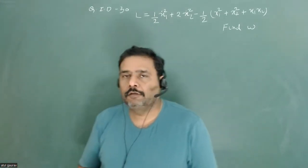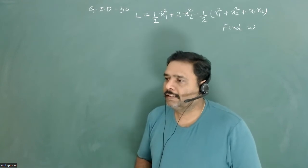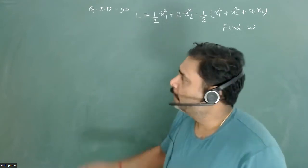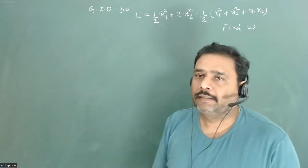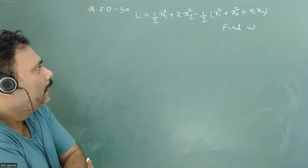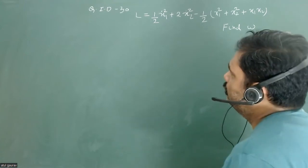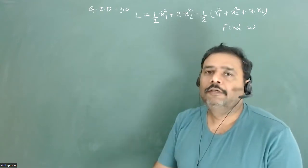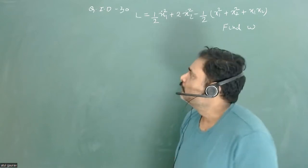Let's solve one more problem from the CSIR NET examination held on 16 September 2022. This problem is mainly from small oscillations, question ID 30. The Lagrangian of a system is given and we have to find the angular frequency omega. We need to write the kinetic energy matrix, then the potential energy matrix, and from the secular equation we can find the angular frequency.